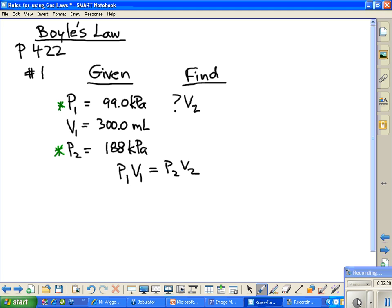And now all we have to do, since the way we've set this up we've got what each of those is worth, we're going to just plug them in. So P₁ is going to be 99.0 kilopascals, and volume 1 that goes with that is going to be 300.0 milliliters.